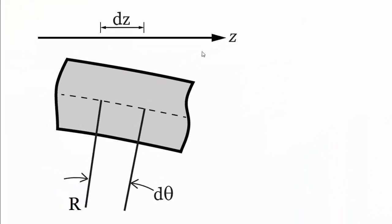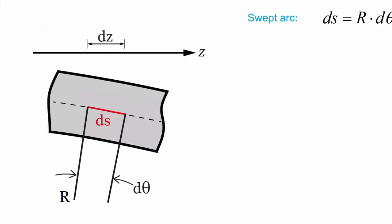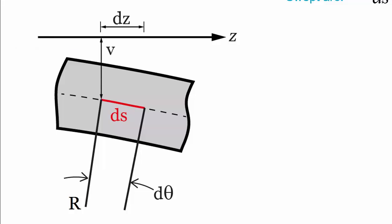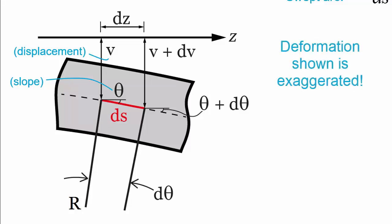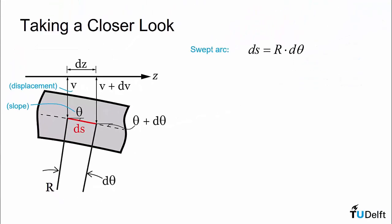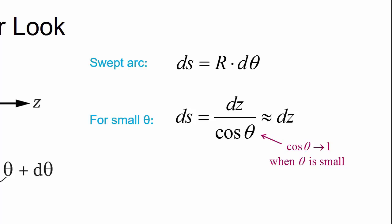Here we see a zoomed-in view of the beam. We can see that our radius of curvature sweeps an arc length ds over the angle dθ, giving us that ds is equal to r times dθ. If we look at the left-hand side of our element, we can define the displacement at this location as v and the slope of the beam as θ. On the right-hand side of our element, both the deflection and slope have become larger by some increment denoted dv and dθ, respectively. Recall that the deformation as drawn is exaggerated. In reality, most engineering structures are designed to have a small deformation. As a result, it is convenient to make a small angle assumption, which allows us to equate the arc length ds to the undeformed width of our element dz.